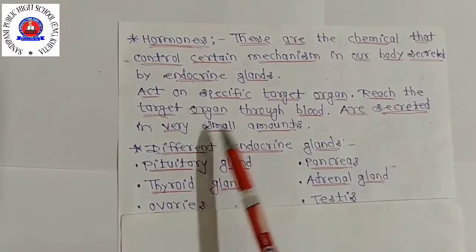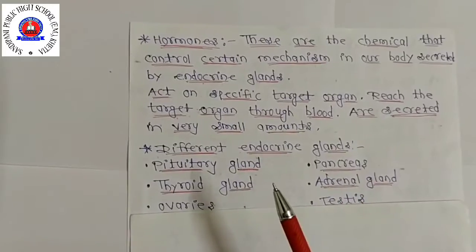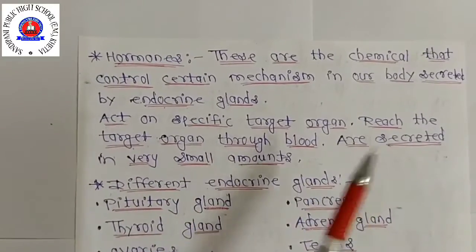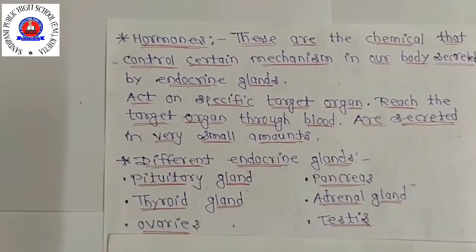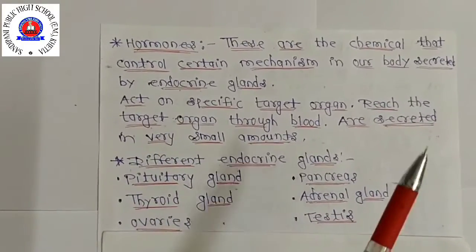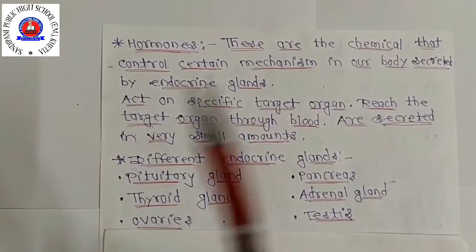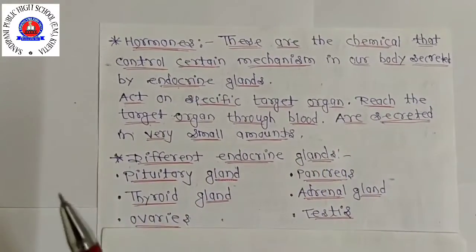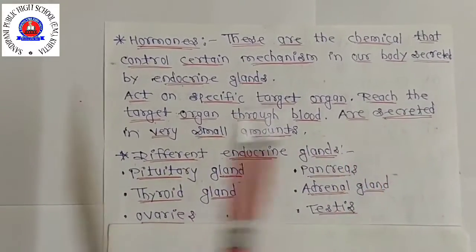Hormones are secreted in very small amounts and perform particular functions. The characteristics of hormones are: first, they are secreted in small amounts by endocrine glands; second, they are poured directly into the bloodstream and carried throughout the body; third, they have their effect at sites different from where they are made, which is why they are called chemical messengers. They act on specific target tissue or organs, coordinating activities and growth.